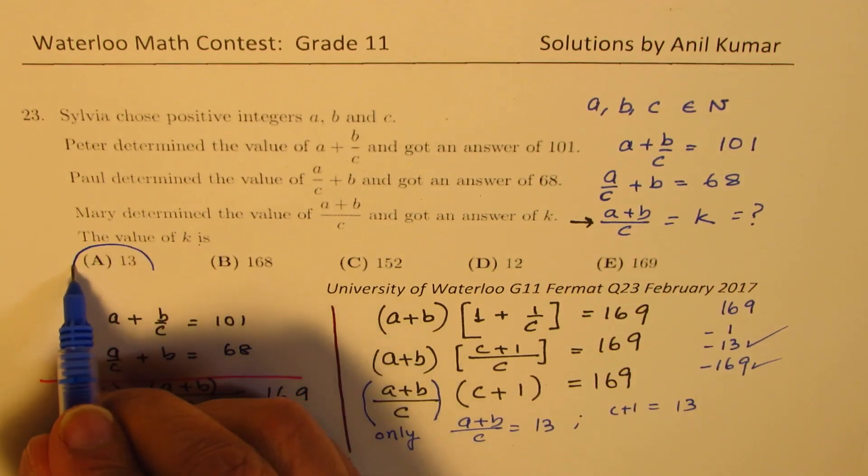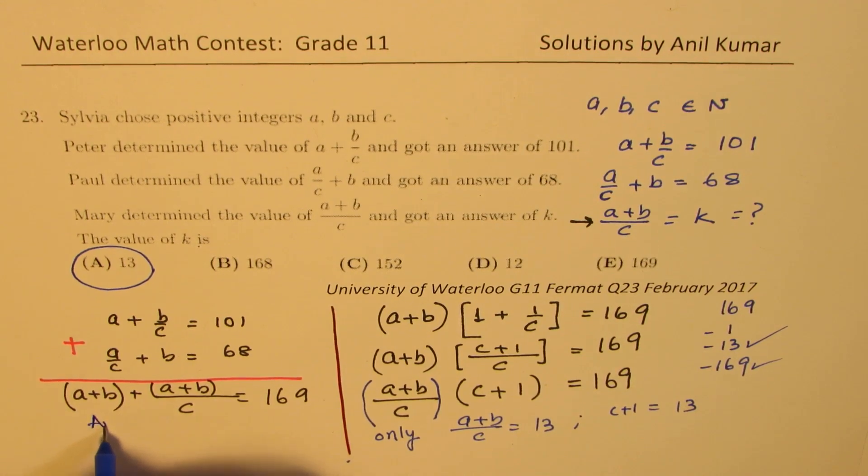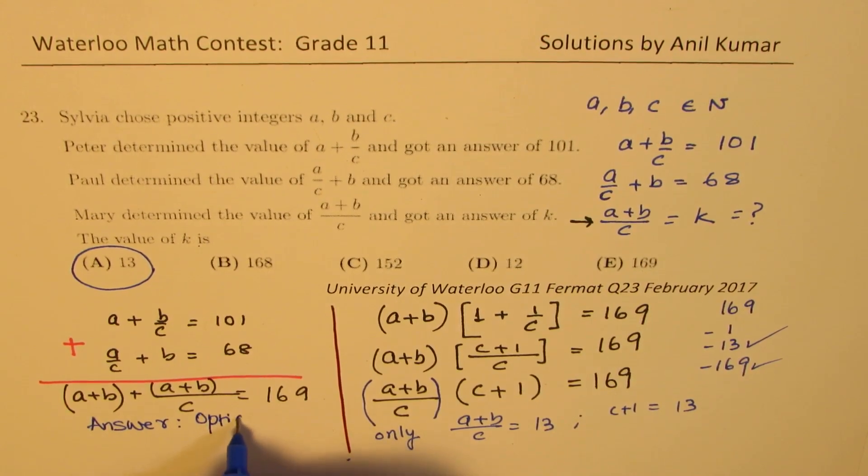What we really want to find is A plus B over C, which is this. So we get our answer and the answer is 13, option A. Is that clear to you?